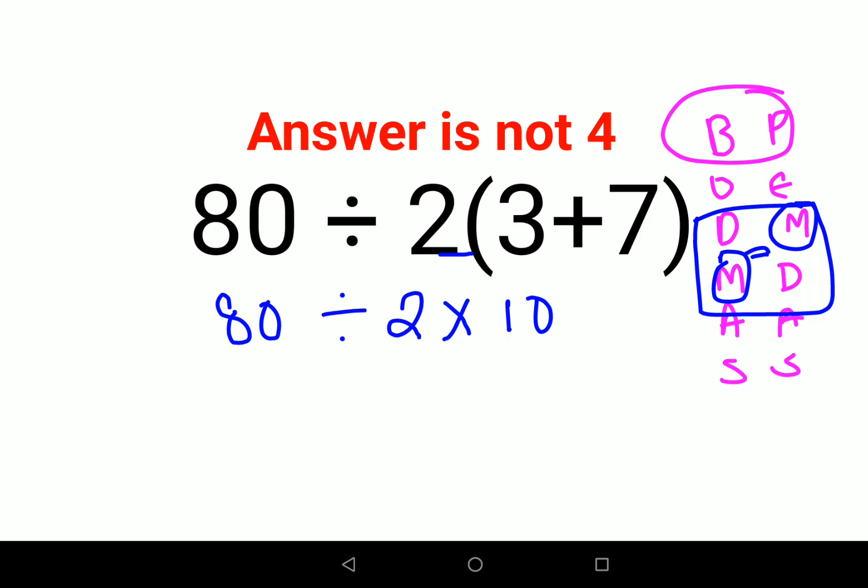So all you need to do is whenever you have these kind of sums which has just division and multiplication, you just go from left to right.